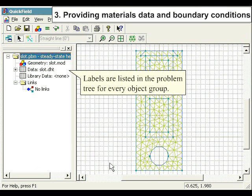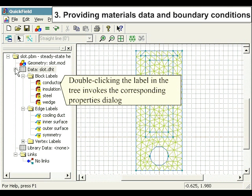Labels are listed in the problem tree for every object group. Double-clicking the label in the tree invokes the corresponding properties dialog.